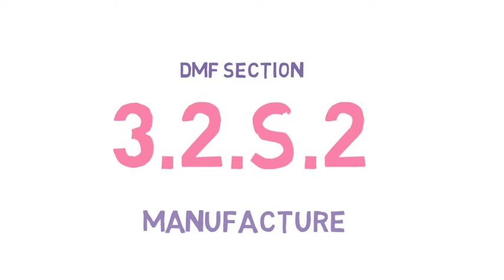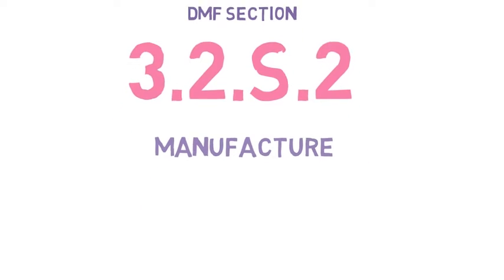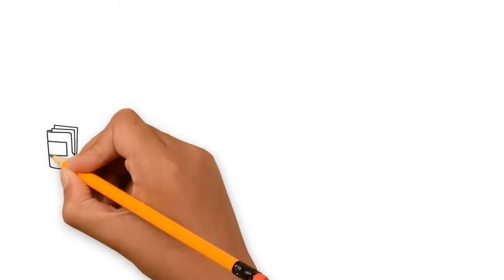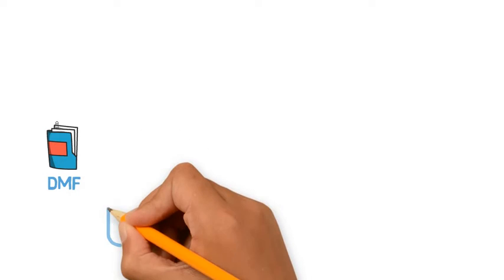DMF Section 3.2.S.2 Manufacture. The DMF in CTD format consists of 7 sections.